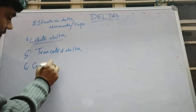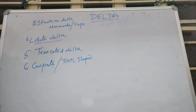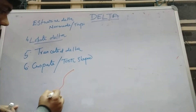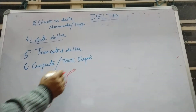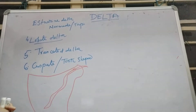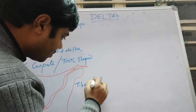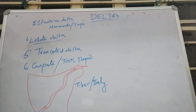Next is the cuspate delta, also known as the tooth-shaped delta, based on its shape. This delta is formed when sedimentary material is deposited on either side of the river mouth, forming a tooth-like shape on both sides of the river. For example, the Tiber river in Italy is the best example of this tooth-shaped or cuspate delta.